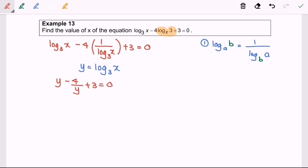I'm going to multiply all the terms with y. So we will have y squared minus 4 plus 3y equals 0. Rearrange: y squared plus 3y minus 4 equals 0.